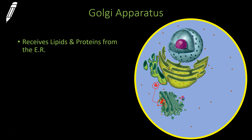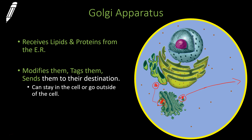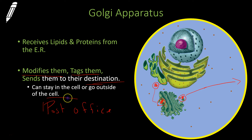The protein will come out on the other side and then it could be embedded in the membrane, stay inside the cell, or go to a different cell. What I want you to know is the Golgi apparatus modifies proteins and lipids, gives them a tag, and then sends them to their destination. An easy way to remember the Golgi apparatus is to think of it as the post office — it sorts the different packages, puts a tag on them, and sends them out. Go ahead and add that into your notes and highlight it.